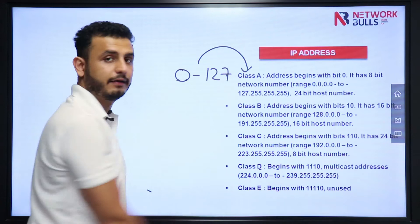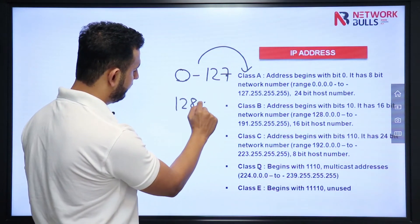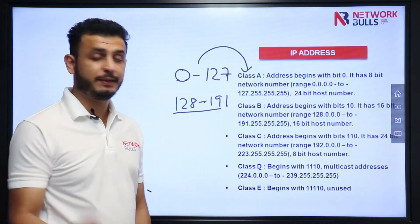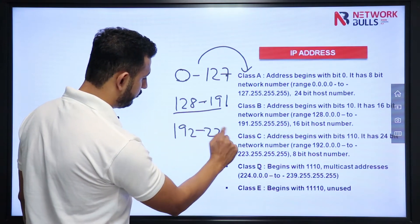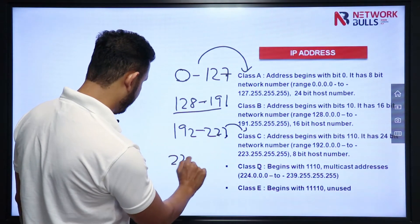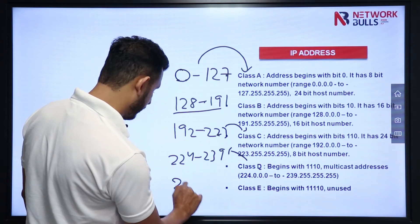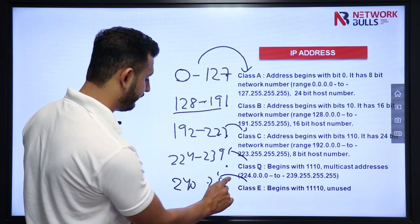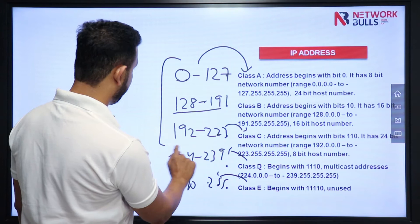If the value in the first octet is from 128 to 191, it belongs to Class B. If the value is from 192 to 223, it is Class C. If the value is from 224 to 239, it is Class D. If the value is from 240 to 255, it is Class E. We will focus mainly on the first three classes.